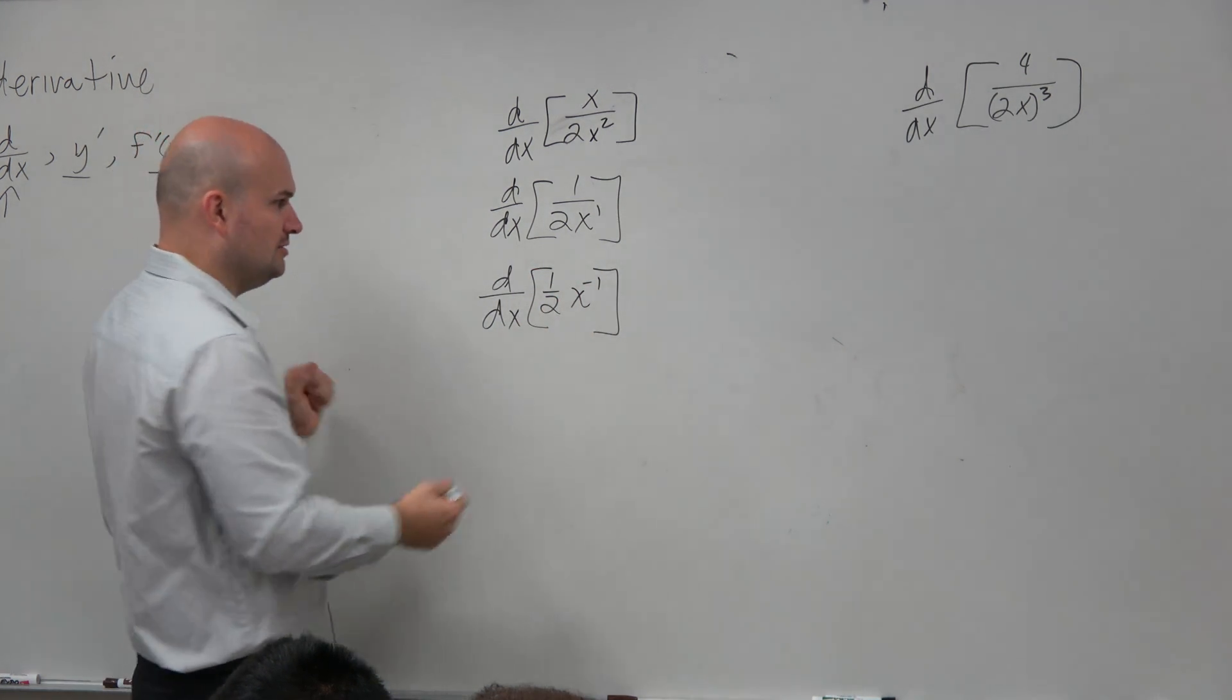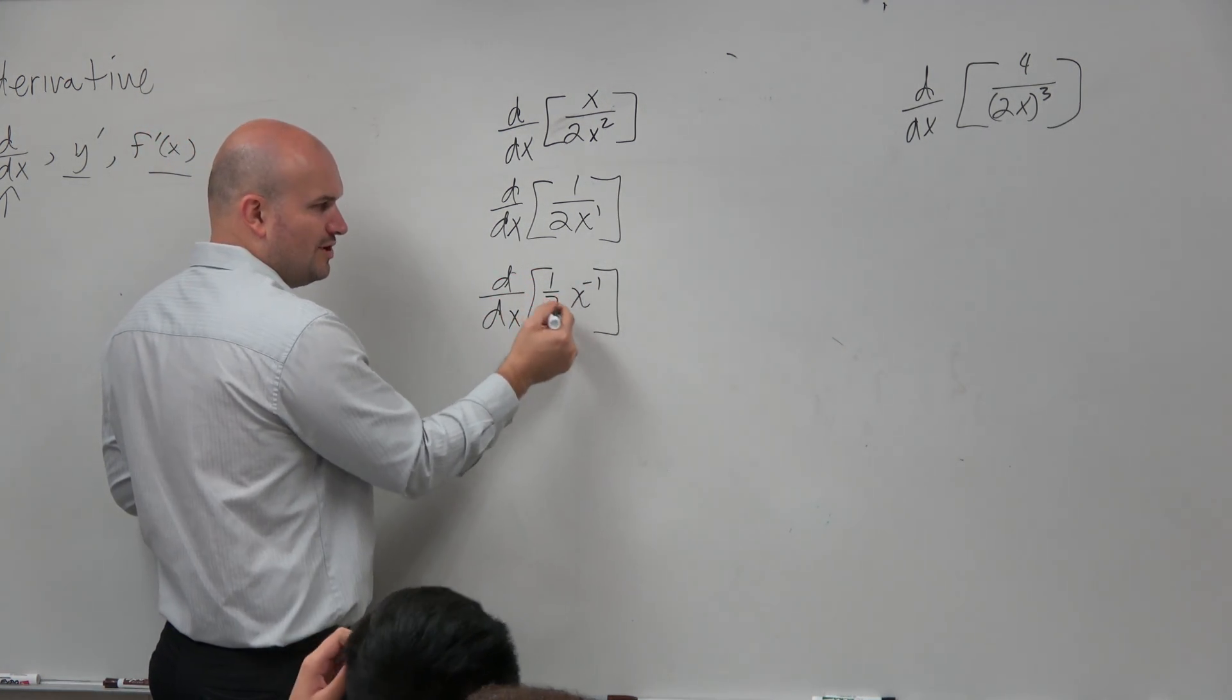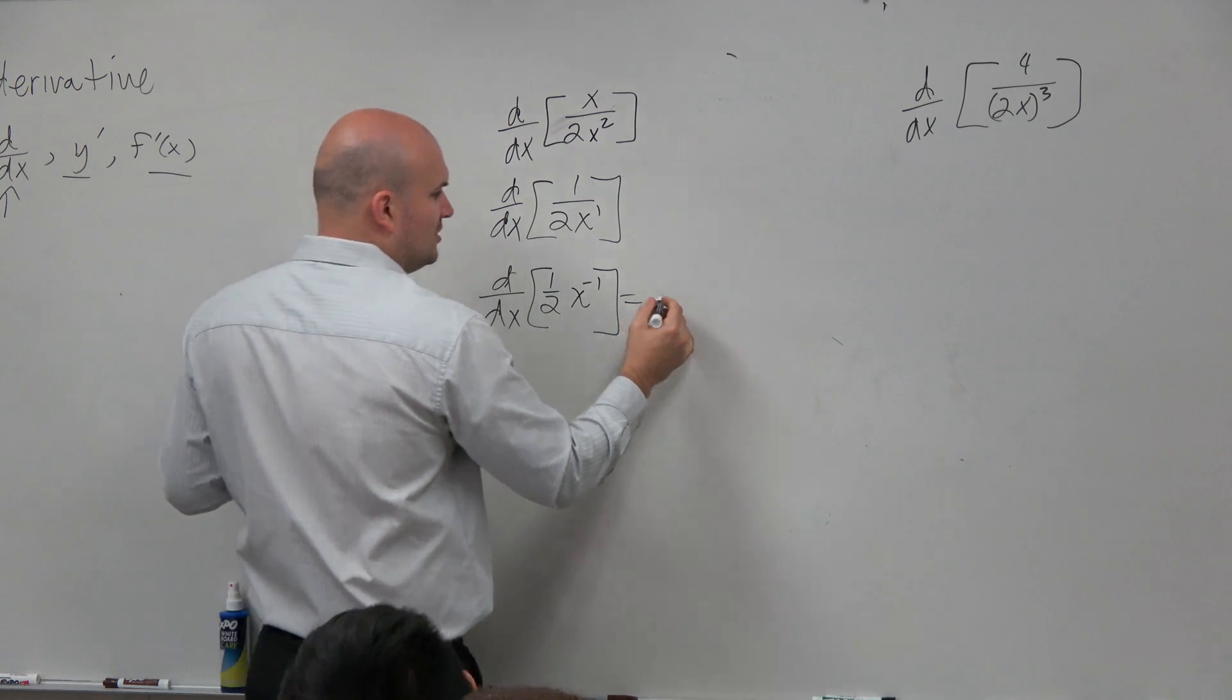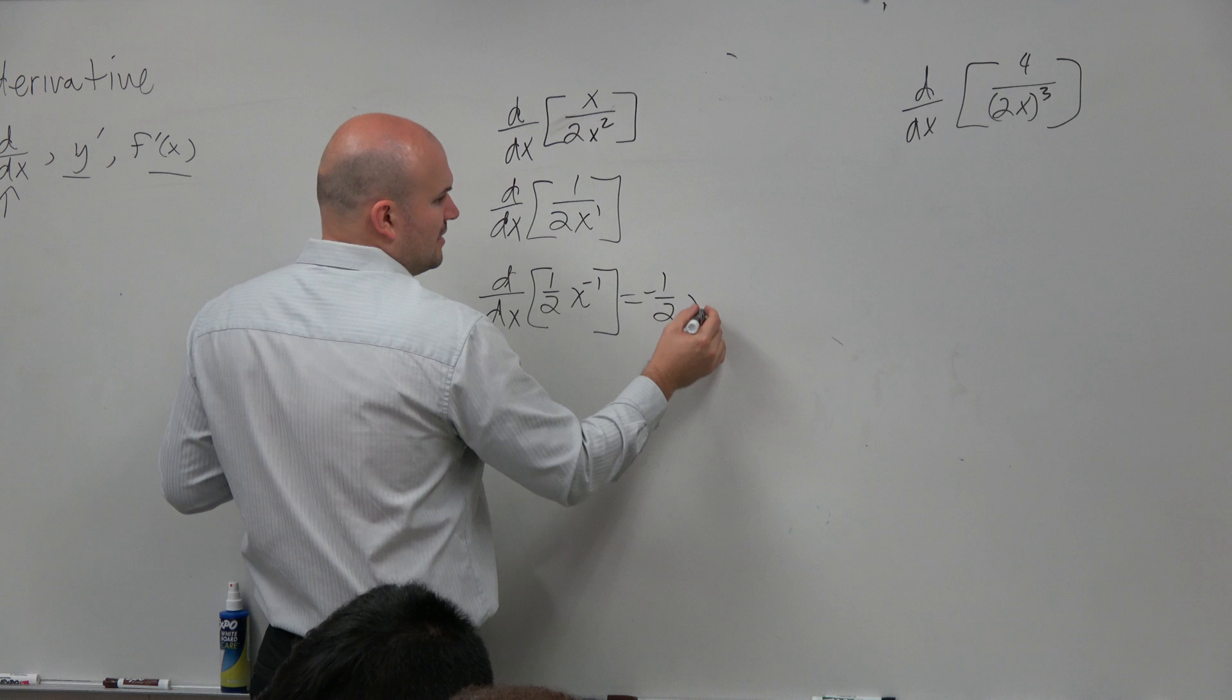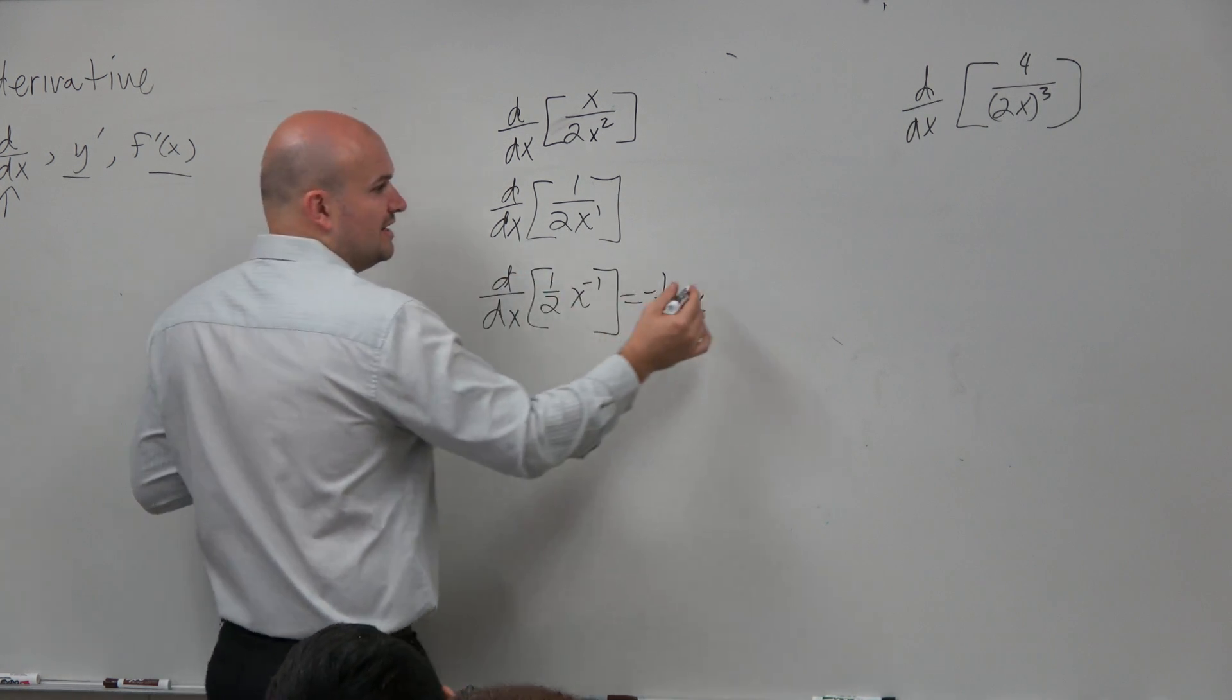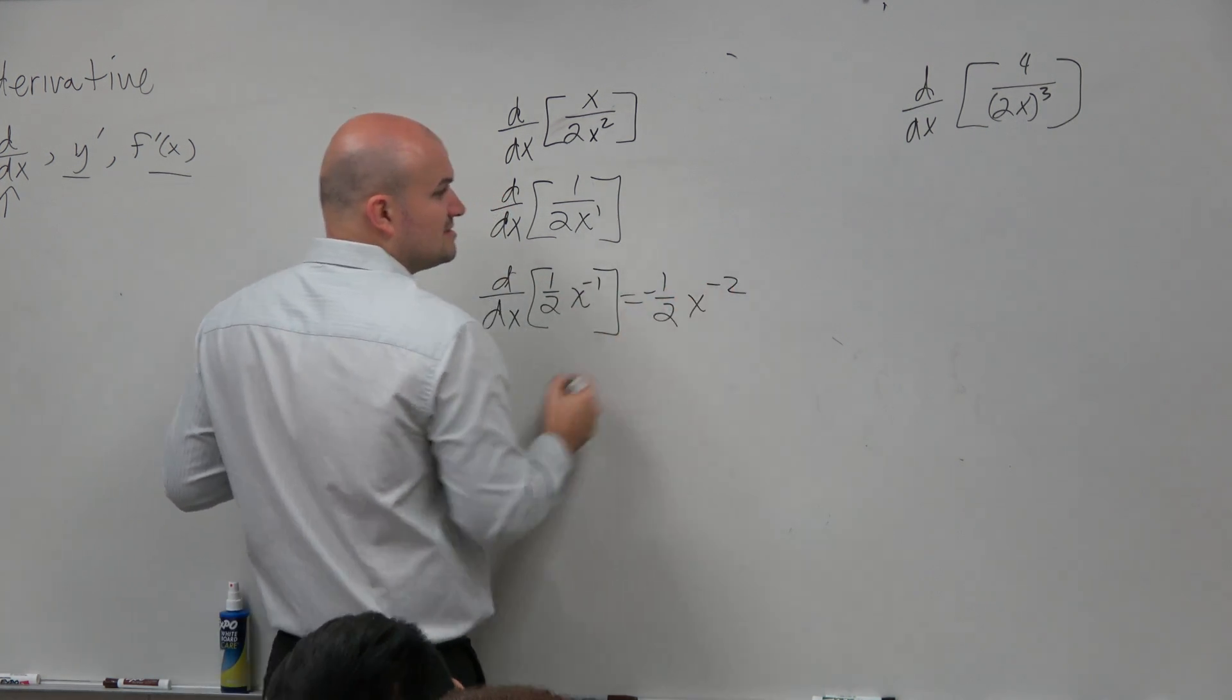Now, once I apply the power rule, d/dx of 1 half x to the negative first is now going to equal negative 1 times 1 half is negative 1 half. x to the negative 1 minus 1 is x to the negative second.